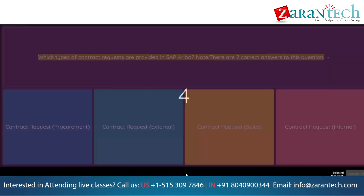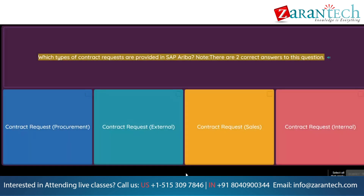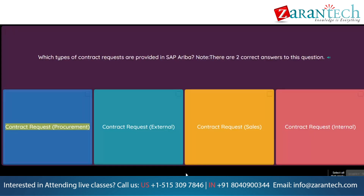Question: Which types of contract requests are provided in SAP Ariba? Note: there are two correct answers to this question. Option 1: Contract request, procurement. Option 2: Contract request, external. Option 3: Contract request, sales. Option 4: Contract request, internal.